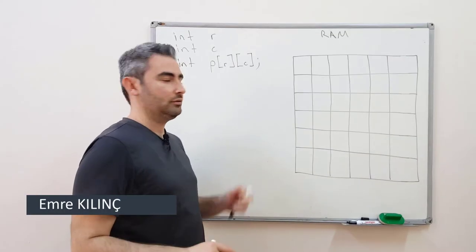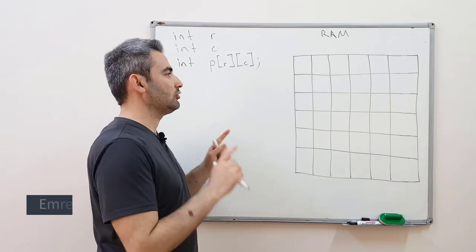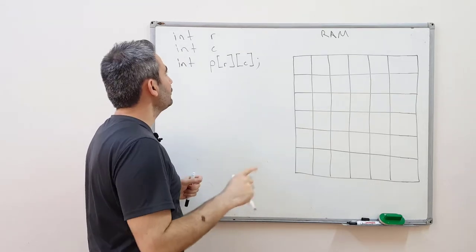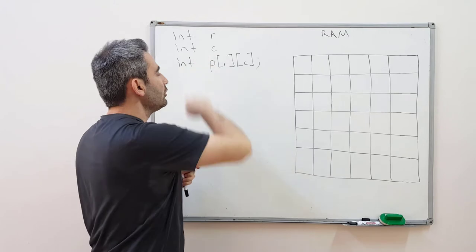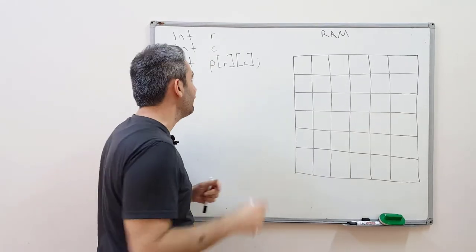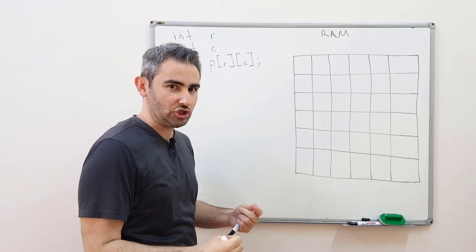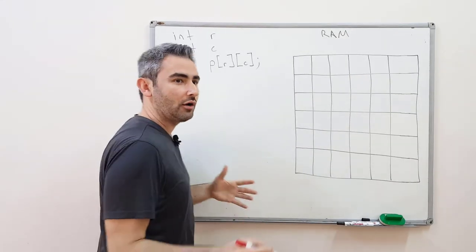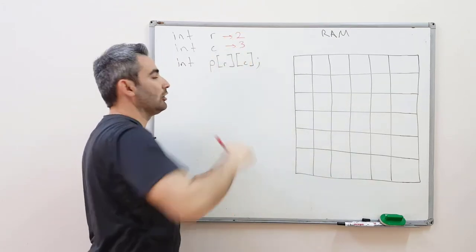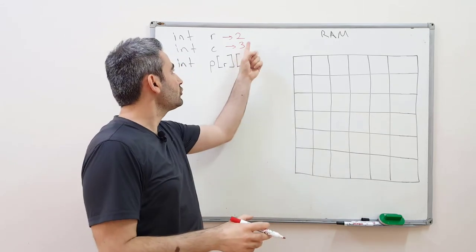Here is a complex example with pointers. We will try to create a two-dimensional array dynamically at runtime. If you want to take your row and column numbers from the user as inputs using scanf, this is not possible — these indices should be defined before compilation. For the sake of our example, let's say the user has entered two rows and three columns, wanting to create a two-dimensional array with two rows and three columns.